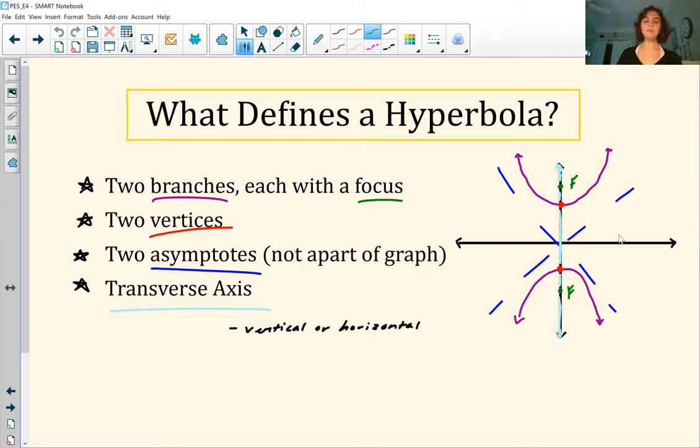And we have these two asymptotes. They're not part of the graph but they just sort of help guide the direction that these branches are going. So you can see I have these dotted blue lines here and it's just showing what the end behavior is, what it's approaching. And there are equations to find out what the asymptotes are and everything, but we're just kind of looking at the structure.